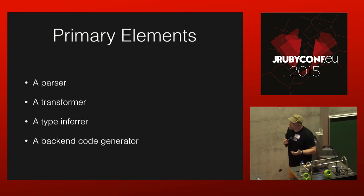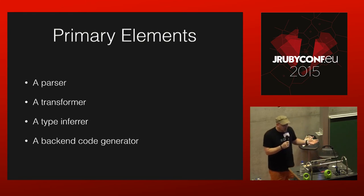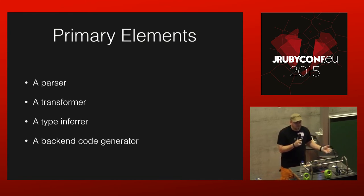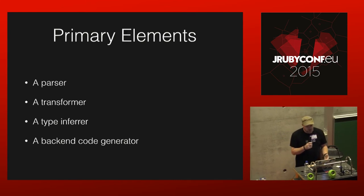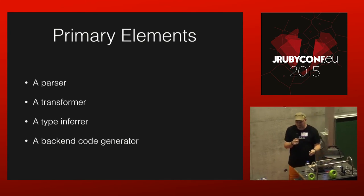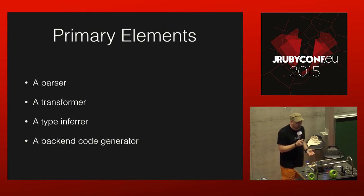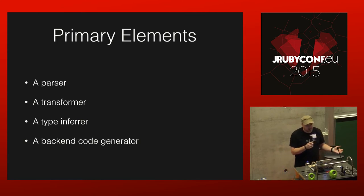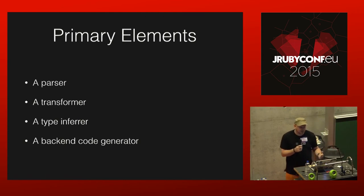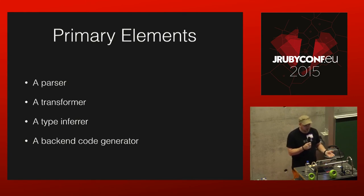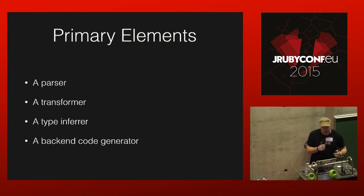So the primary elements: the parser is based on the JRuby parser and produces a Ruby abstract syntax tree, or AST. Then the transformer takes the Ruby AST and converts it into a Mirah-specific AST. The type inferrer then decorates the Mirah AST with appropriate typing information for the target backend. And finally, the backend code generator actually compiles the code.